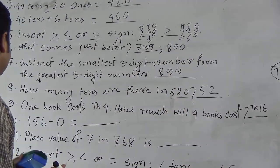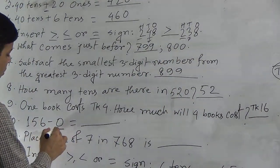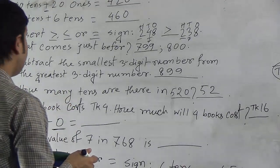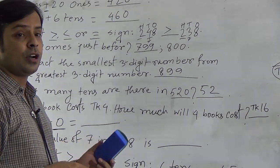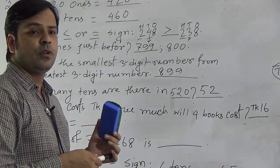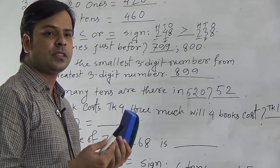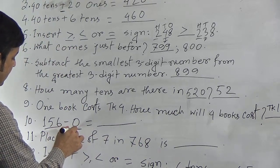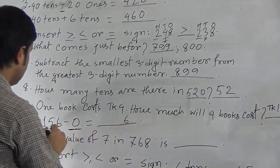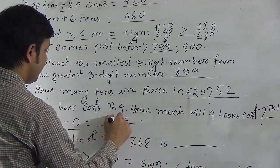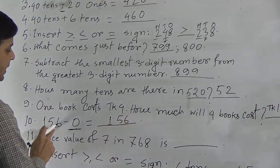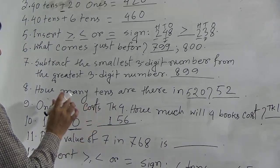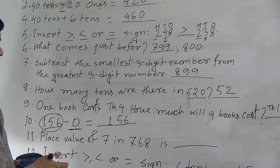Question 10: Subtract 0 from 156. Remember, if we subtract 0 from or add 0 to any number, the answer is that number itself. So 156 minus 0 equals 156.